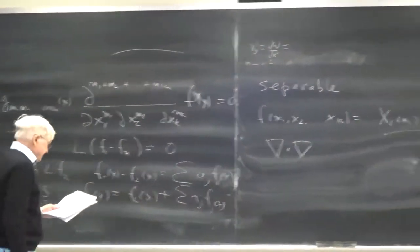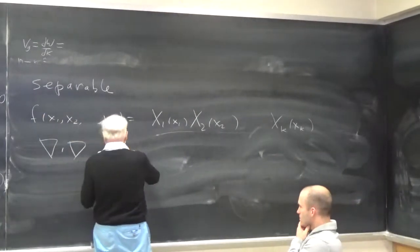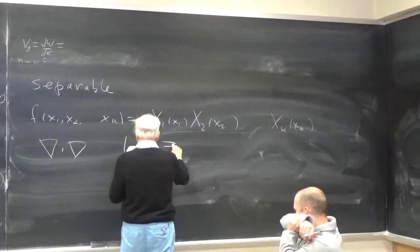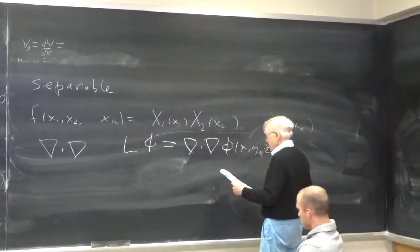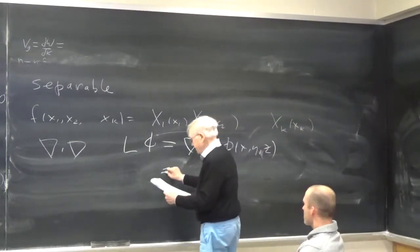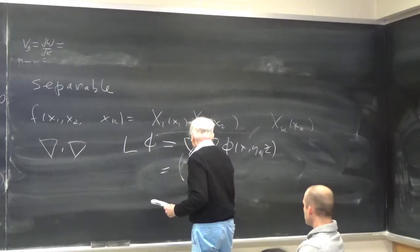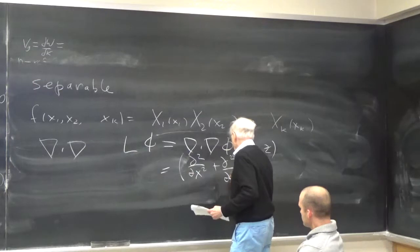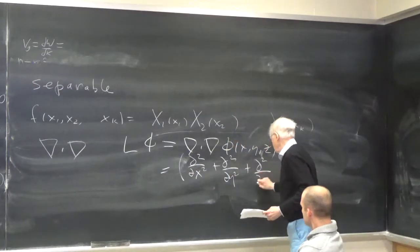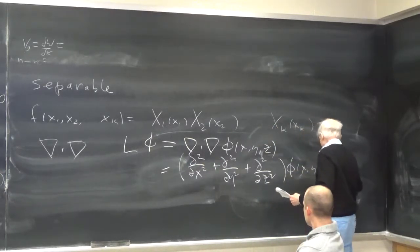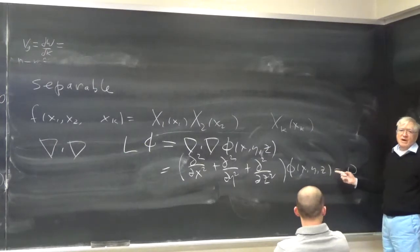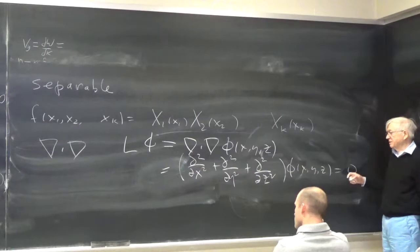Let me give some examples. One example is the Laplacian L of φ, which in rectangular coordinates is the partial second derivatives with respect to x, y, and z applied to φ(x, y, z) equals zero. This equation separates in rectangular, spherical, and in fact 11 different coordinate systems.